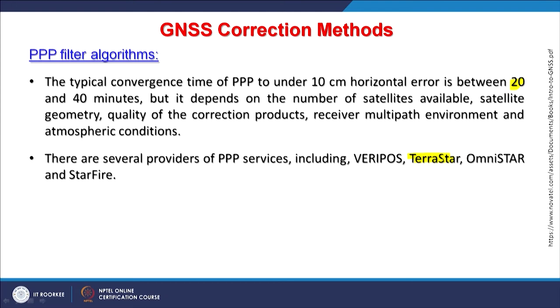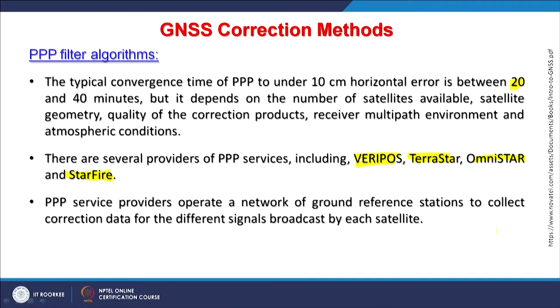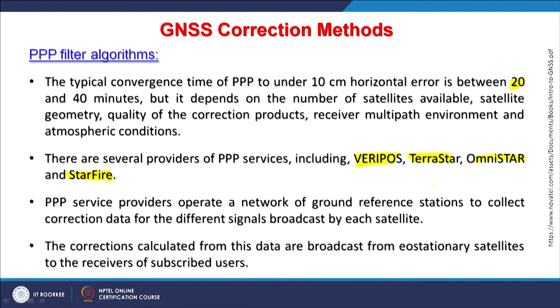There are several providers of PPP services. We have already discussed TerraStar; there are others like Veripos, Omnistar and Starfire, and many more are coming because there is a lot of demand for high precision positioning services. These PPP service providers operate a network of ground reference stations to collect correction data for the different signals broadcasted by satellites. The corrections are then broadcasted from geostationary satellites to subscribed users — so the service is not free, unlike SBAS which may be free.